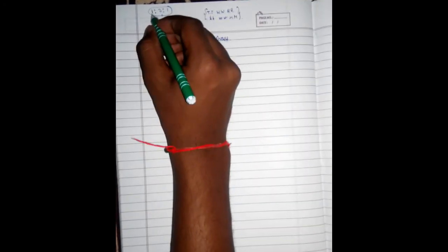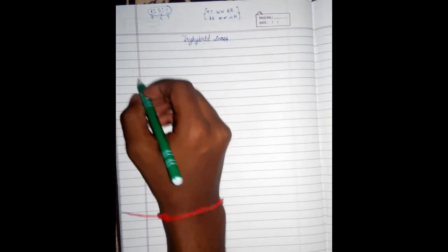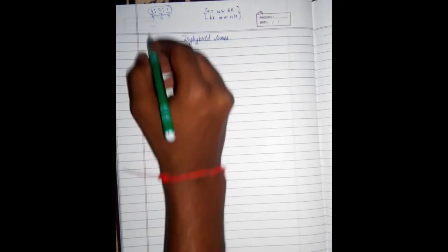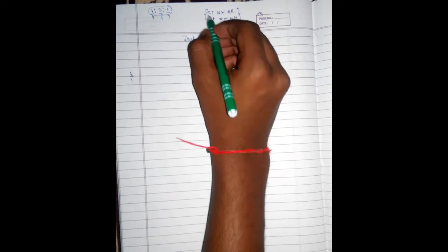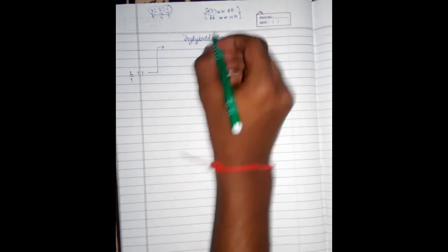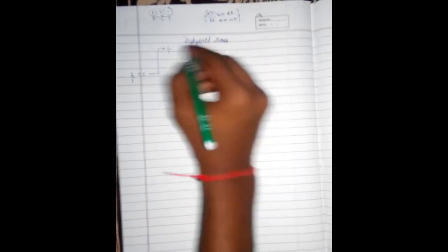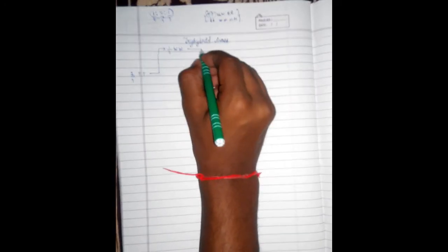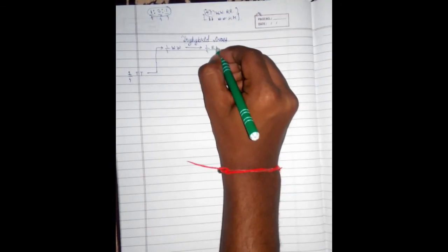So let us do the tri-hybrid cross. Here, one upon four — because counting all, there will be four. So firstly we will write one upon four and we will write the first character: capital T capital T. Then we make an arrow and take the second character, writing one upon four and capital W capital W. Now for the third character: one upon four and capital R capital R.